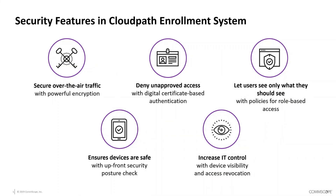The CloudPath Enrollment System's security features map directly to the flaws intrinsic to default network onboarding methods. First, we secure data in transit over the air with powerful encryption — data flowing over the Wi-Fi connection between the device and the access point is encrypted so it can't be spied upon. We also use digital certificates as the basis for network authentication, so only approved users gain access. And we apply role-based policies through your network infrastructure for centralized enforcement.